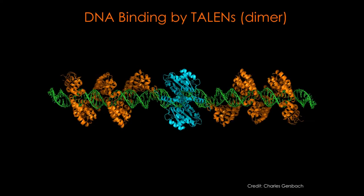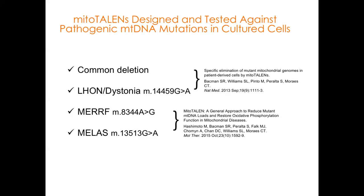We've used for many years TALENs — that's a DNA editing platform. It's made of proteins, basically two dimers, shown here in yellow. They have a blue catalytic part that cleaves the DNA, shown here in green. The yellow part gives specificity, binding to a specific sequence on both sides. We've used this architecture in culture cells to eliminate several mutations, including the common deletion, a Leber's dystonia mutation in ND6, an MARF mutation, and a MELAS mutation in ND5.